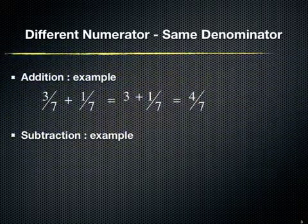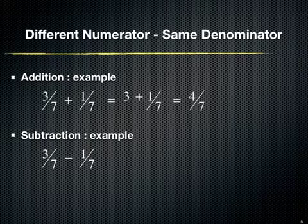To subtract fractions which have same denominator, we simply subtract the two numerators while keeping the denominator as it is. We perform subtraction on the previous example. After subtracting two numerators, that is 3 minus 1, the final result of the subtraction comes as 2 upon 7.